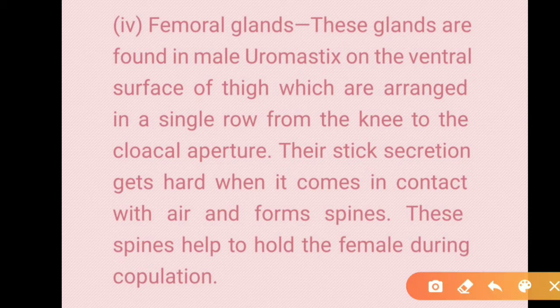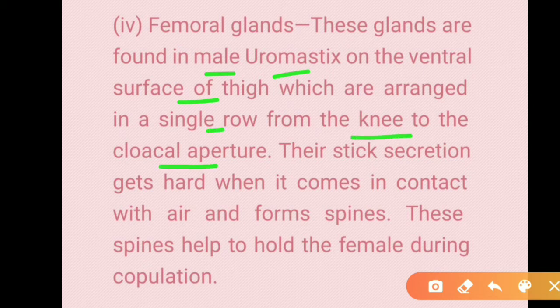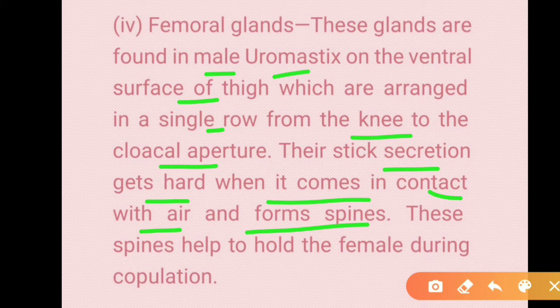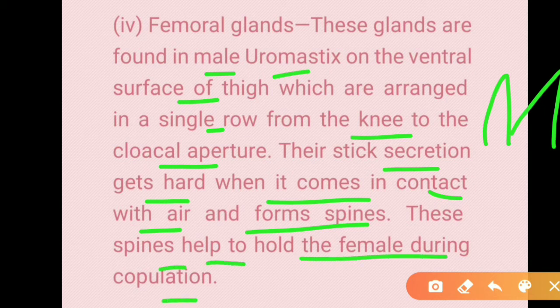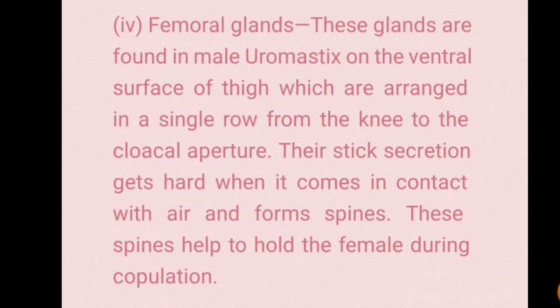Femoral glands are found in male uromastics, a kind of reptile. They are located on the ventral surface of the thigh and are arranged in a single row from the knee to the cloacal aperture. Their sticky secretion hardens on contact with air, forming spines. These spines help hold the female during copulation in uromastics.